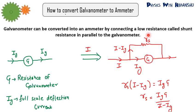So the value of shunt resistance will be Ig into G divided by I minus Ig. But please remember, whenever you get a question in exam like how will you convert this galvanometer into an ammeter, please draw the diagram.